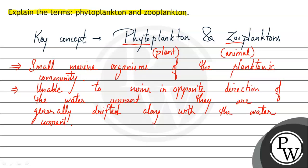Generally, the plants are eaten by the animal planktons. These animal planktons then become the food for smaller fishes, and the food chain continues towards the larger fishes. In this way, phytoplankton and zooplankton are both organisms and members of the planktonic community.